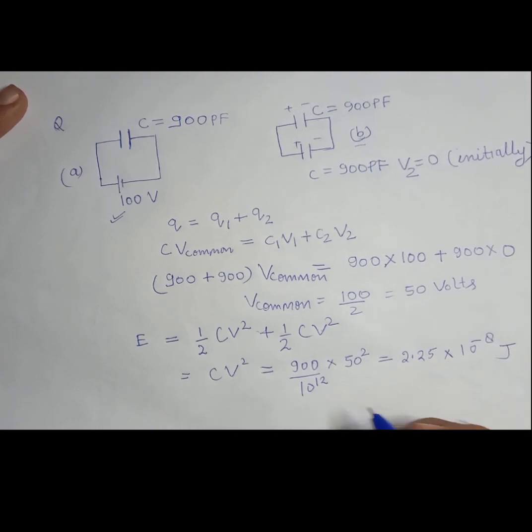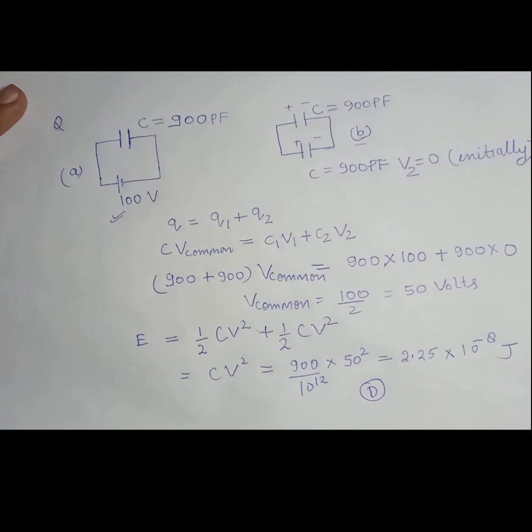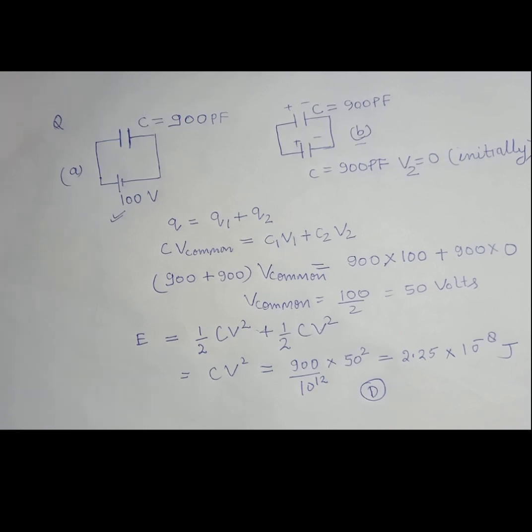And your answer would be 2.25 into 10 to the power minus 8 joules, right? So which option is matching? Part D, option D, right?